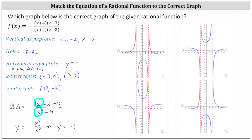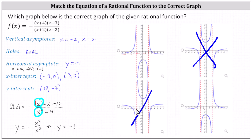Now let's see if we can select the correct graph. All four graphs have vertical asymptotes at x equals positive two and x equals negative two, and none have holes. Checking for a horizontal asymptote of y equals negative one: the first graph does have it, but the second graph does not — its horizontal asymptote is y equals positive one, so we eliminate it. Going to the second row, the first graph also has a horizontal asymptote of y equals one, not negative one, so we eliminate that as well. The last graph does have a horizontal asymptote of y equals negative one, leaving us with two options.